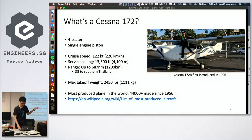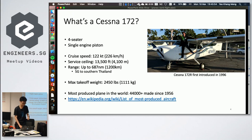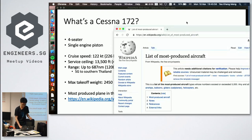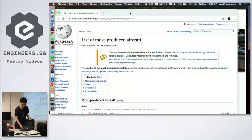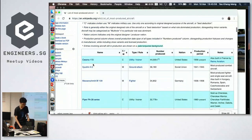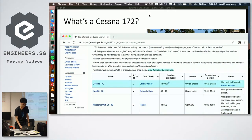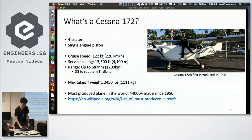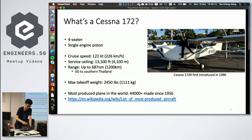The Cessna 172 is the most produced and most common plane in the world — not an Airbus or a Boeing. You can check Wikipedia's list of most produced aircraft; it's over 44,000 and still counting. Looking at the specs, it weighs almost one ton and can go about three times faster than a typical car.